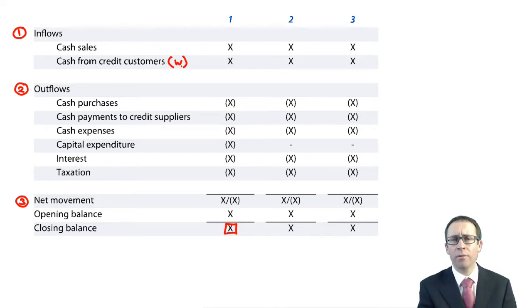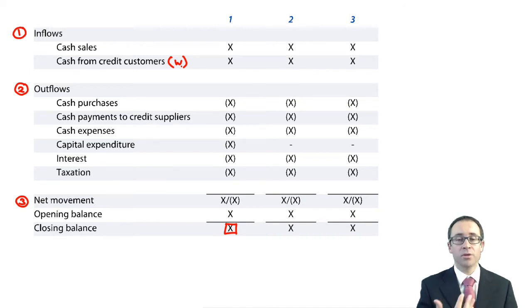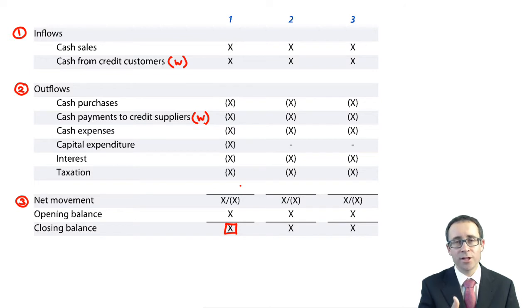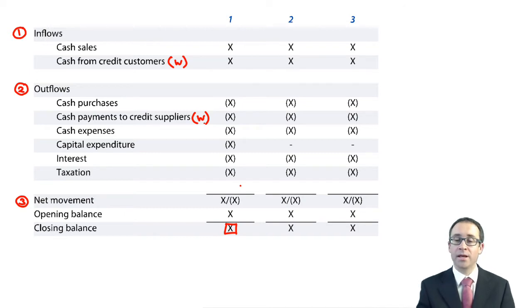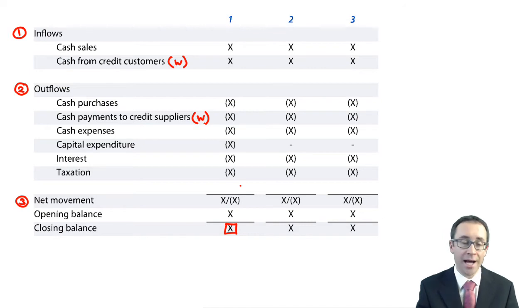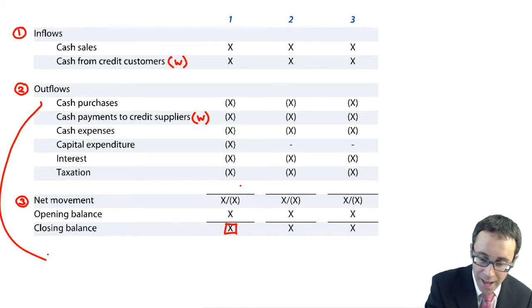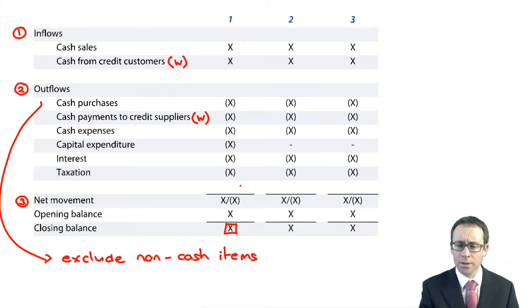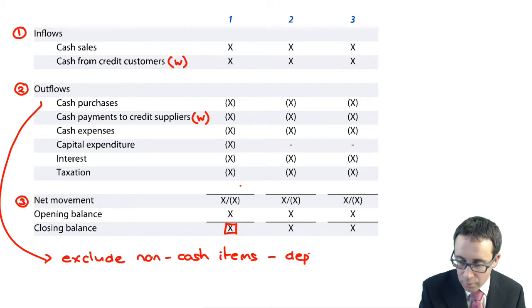In terms of your outflows, the main outflows come from your operating activities — purchasing your goods. With your purchases, you can look at your cash purchases, but don't forget that you may also make purchases on credit. If you make purchases on credit, do you pay those suppliers this month or next month? You've then got cash expenses and capital expenditure — there may be a particular month where you make a big investment. You've also got interest and tax. However, when looking at your outflows, remember to exclude any non-cash items. The prime non-cash item you do not include is depreciation.